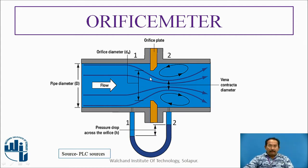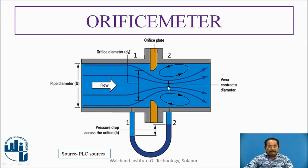Now observe the behavior here. Due to the reduced area — the area has been reduced due to this orifice plate — you can observe the diameter of the jet is reduced. This reduced diameter is called vena contracta. This is a very important term; keep it in mind. Vena contracta is used to calculate the coefficient of contraction.